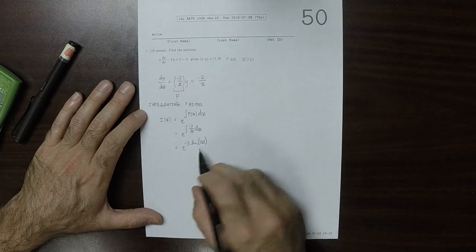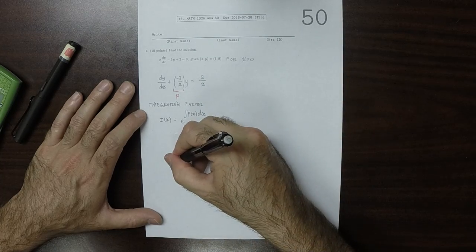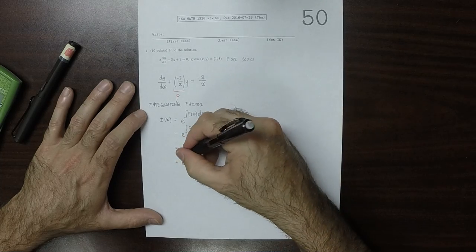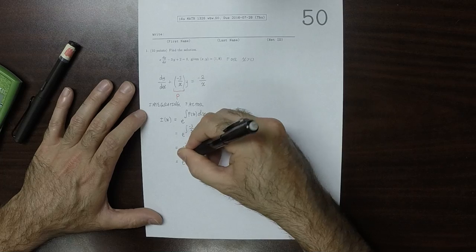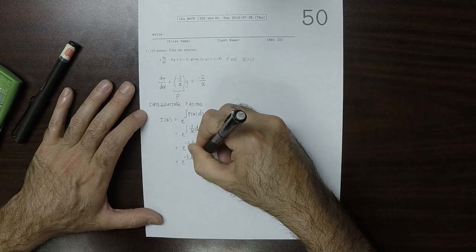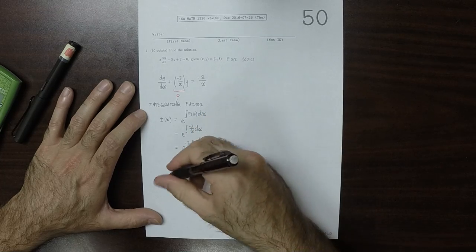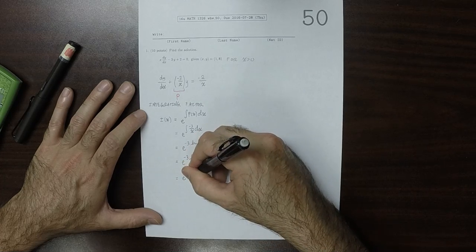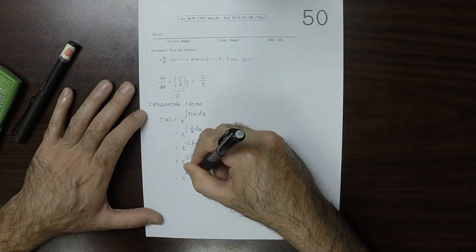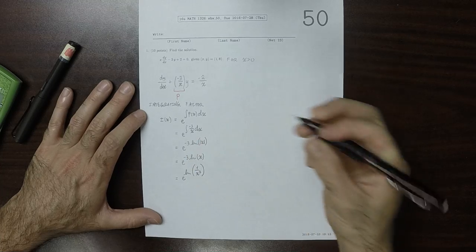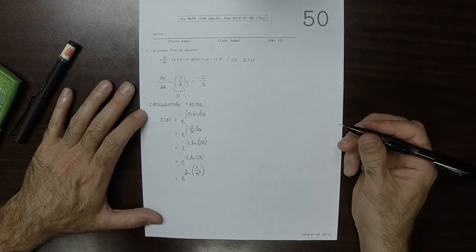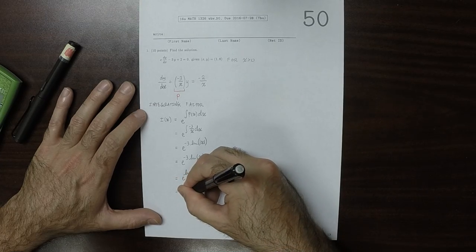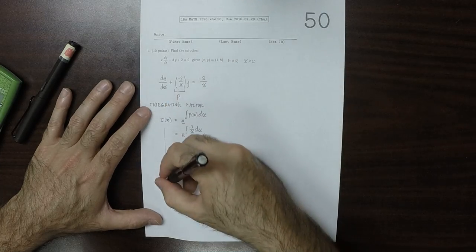We can drop the absolute value because we have the simplifying assumption that x is positive. So this is exponential of negative 3 log x. The negative 3 can be brought inside, so this is exponential of log of 1 over x cubed, because x to the negative 3 is 1 over x cubed. So this is 1 over x cubed. That's the integrating factor.